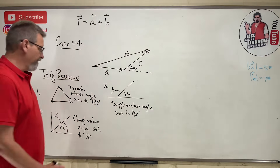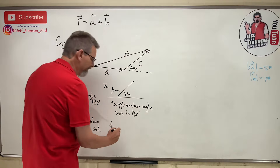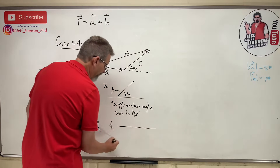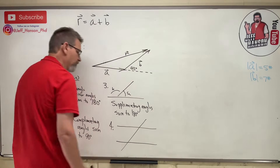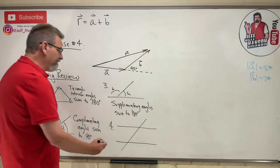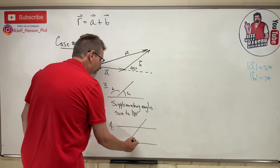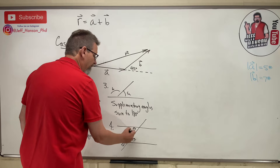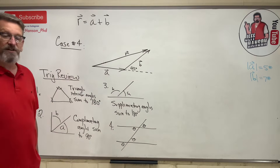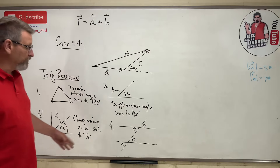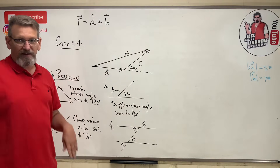Number four: if you have two parallel lines with a line crossing between them, and one angle is theta, then the corresponding and alternate angles are also theta. A lot of times you don't see an angle, but if you draw yourself some horizontal lines you can figure it out.